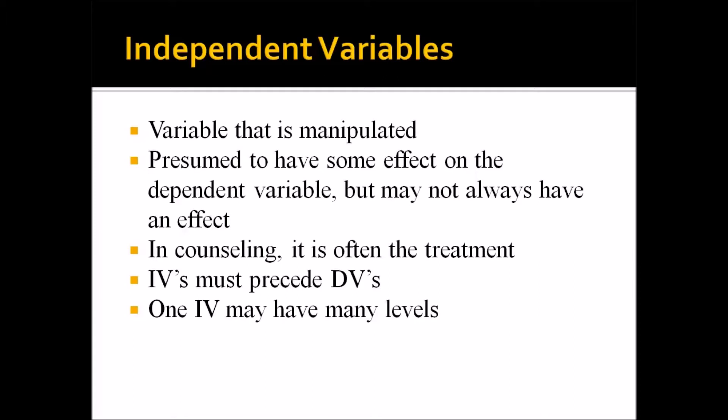When we're constructing our research questions, we have to be able to know what variable is the independent variable, how many are there, how many levels does the independent variable have, and which variables are dependent variables. The independent variable is a variable that is manipulated, although there is an important exception to this rule. It's presumed to have some effect on the dependent variable, but may not always have an effect — oftentimes that is what we're testing to see.